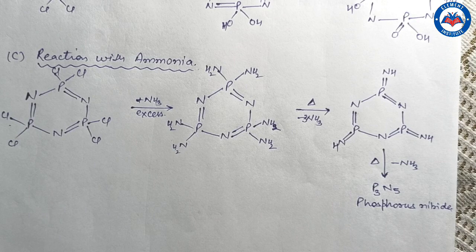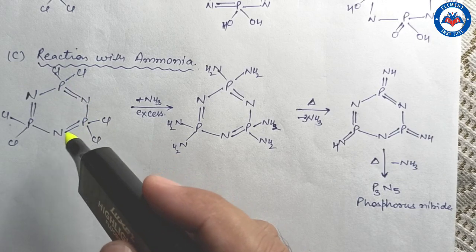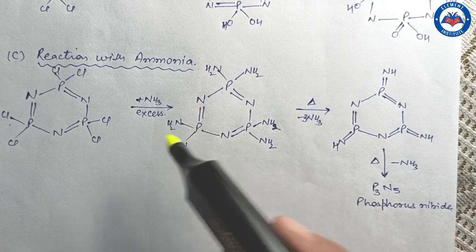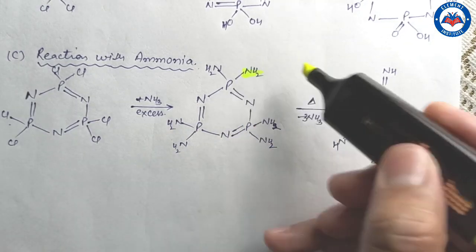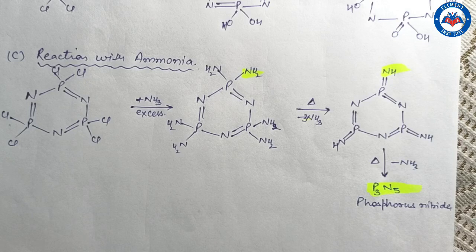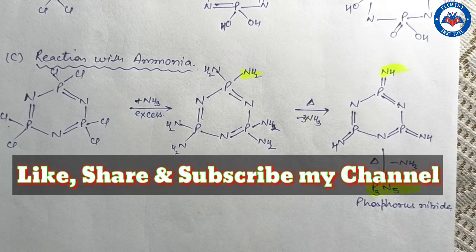Lastly, we have the reaction with ammonia — ammonolysis reactions. The triphosphonitrilic chlorides react with ammonia to give various substituted products by replacement of chlorine with amine groups. However, in the presence of excess ammonia, phosphorus nitride is formed.